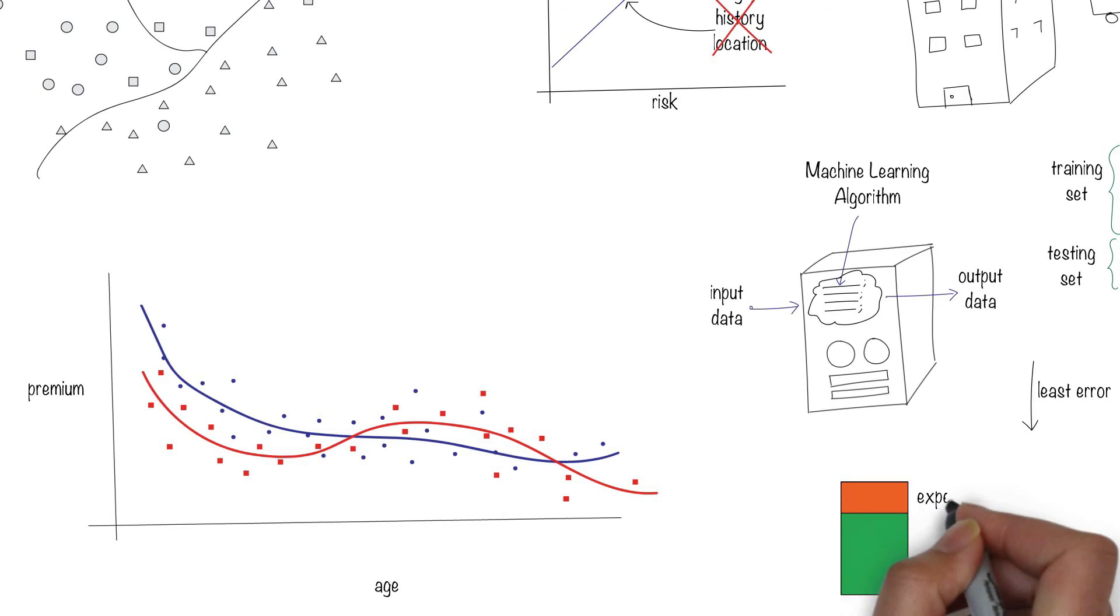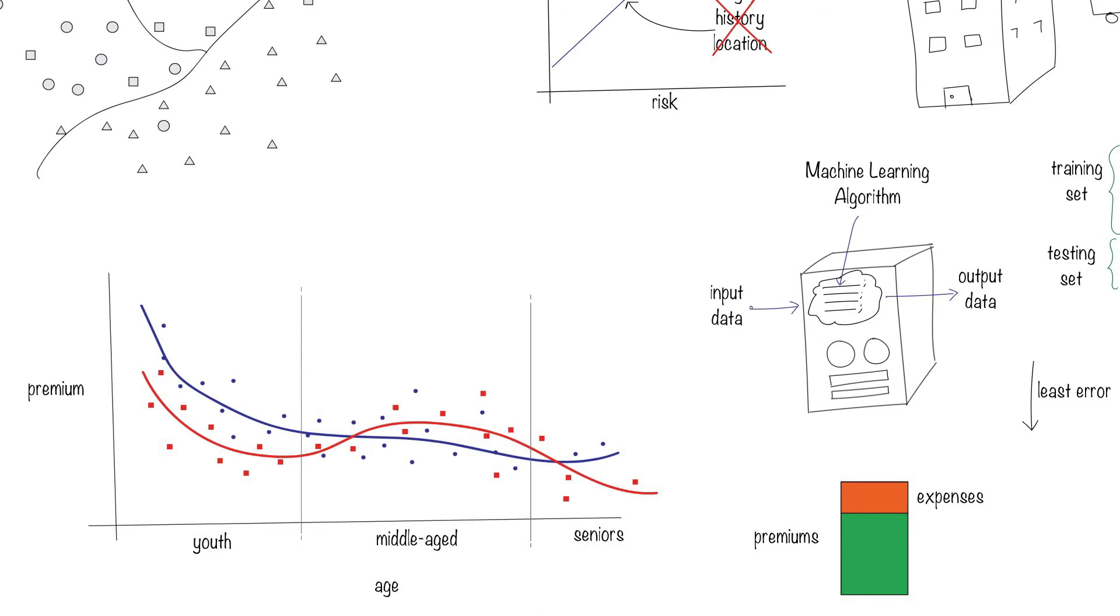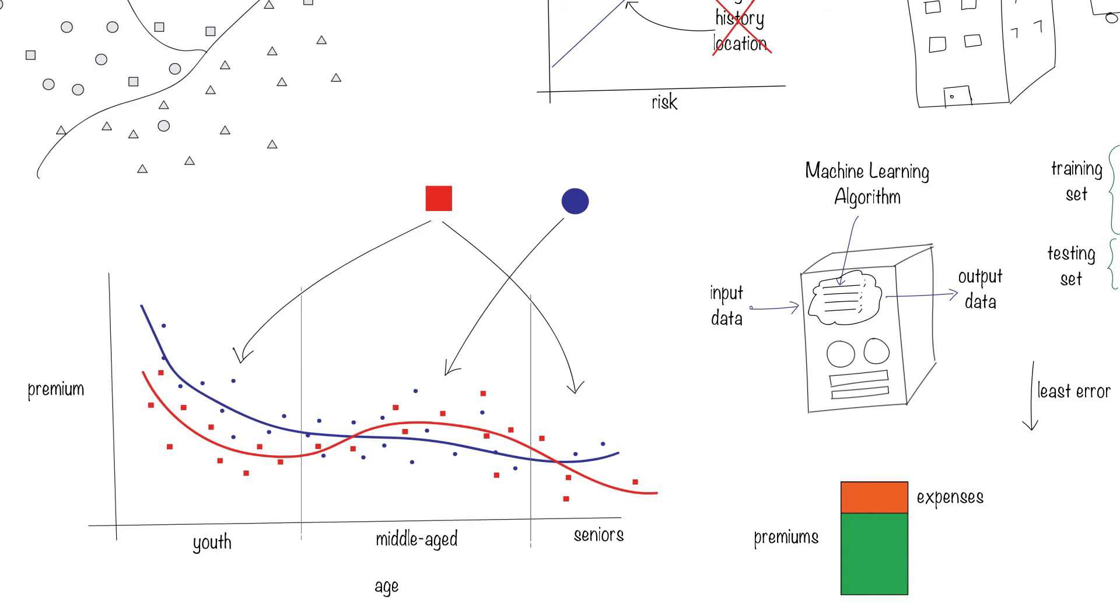If your expense ratio is comparable to your competitors, then you know that you're capturing the younger and senior segments of the population, and your competitor is capturing the middle-age group.